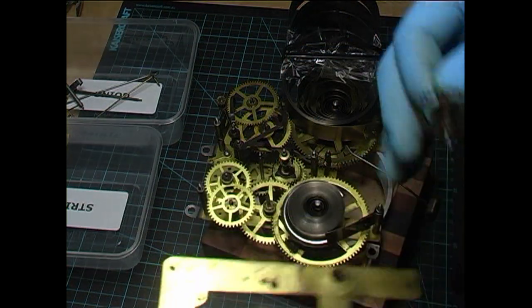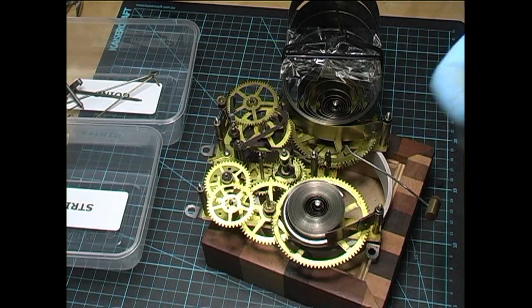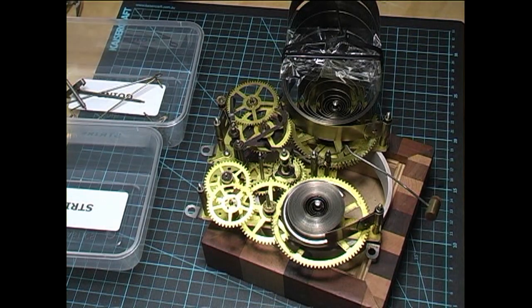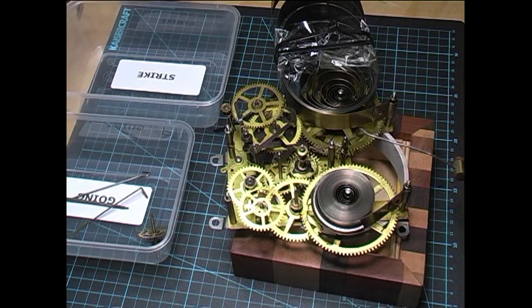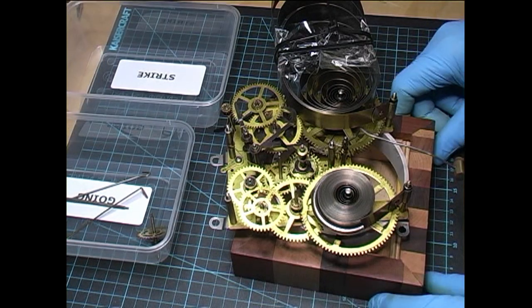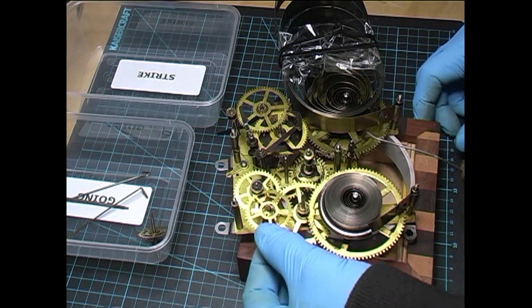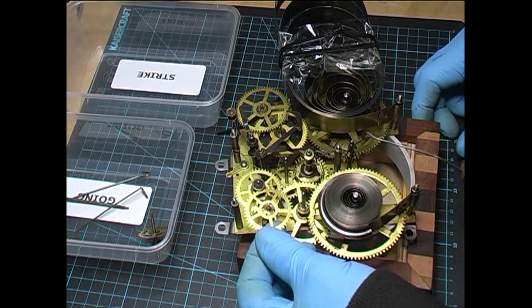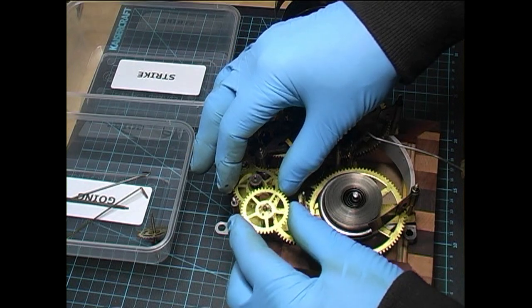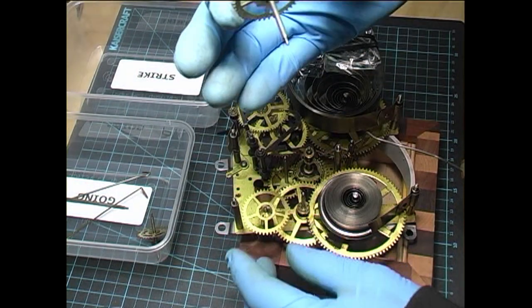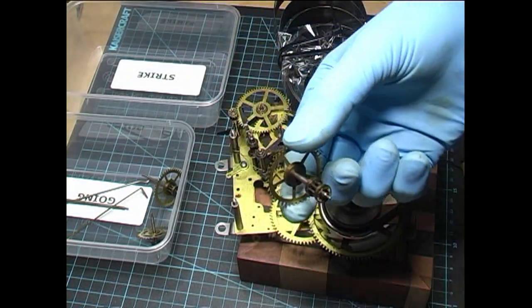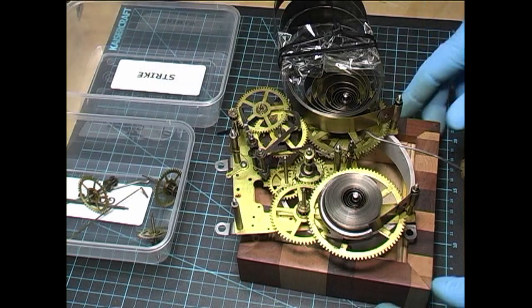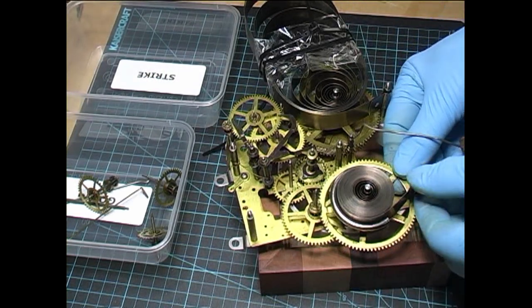We'll take the movement to pieces. Once we put it through the ultrasonic bath to clean it, we'll then check the pivots and bushes to see if we need to do any rebushing. We'll take the going train to pieces first. Third wheel, second wheel.